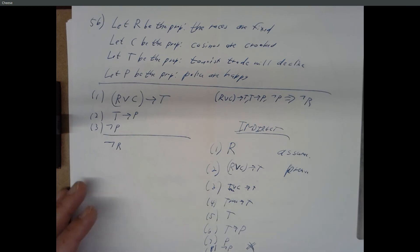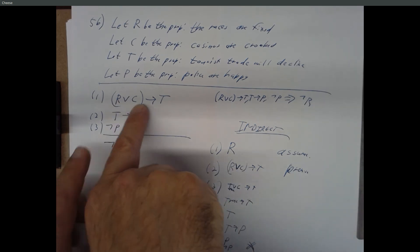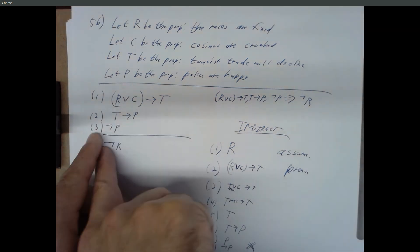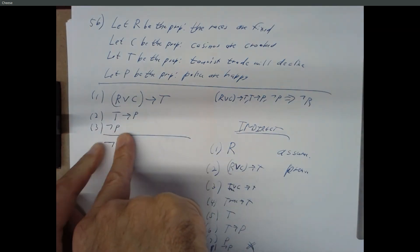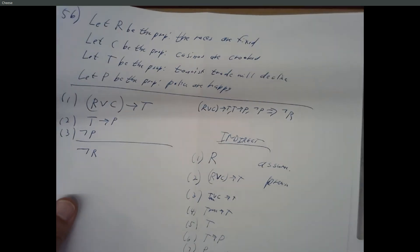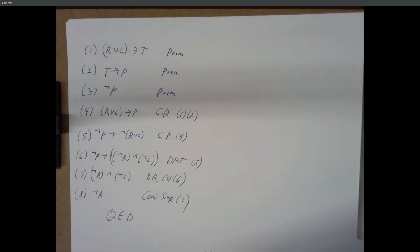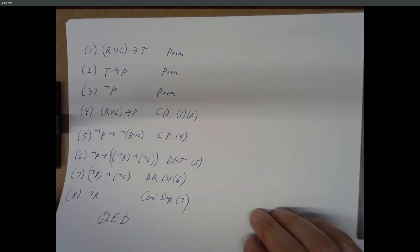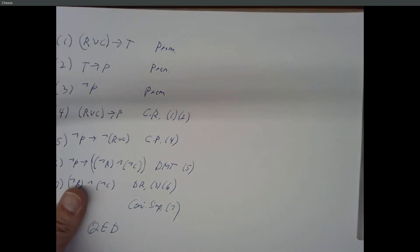And then you can put that together with T implies P and get P. And then we have not P. And there's your contradiction. So if you throw in all the formalism, it takes a few more steps. But that's exactly the logic of it, right? If R is true, this is true, T is true, P is true, P is false. Contradiction. Alright, any other questions?